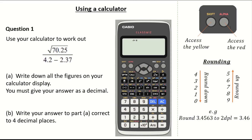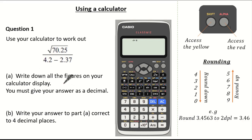In this past exam question, the question states that we need to use our calculator to work out the square root of 70.25 over 4.2 subtract 2.37. We are asked to write down all the figures on our calculator display, making sure we give our answer as a decimal.